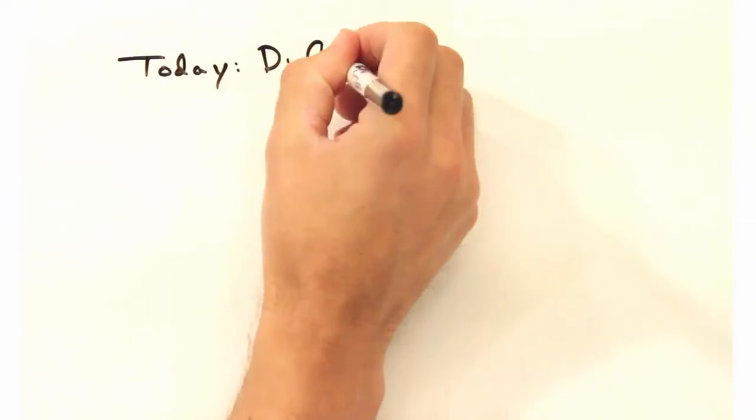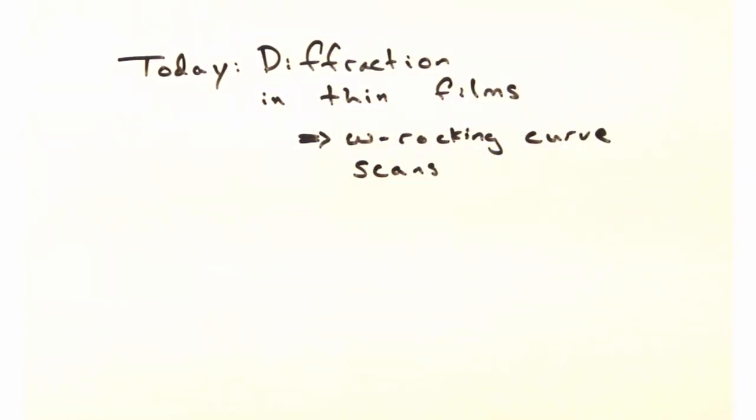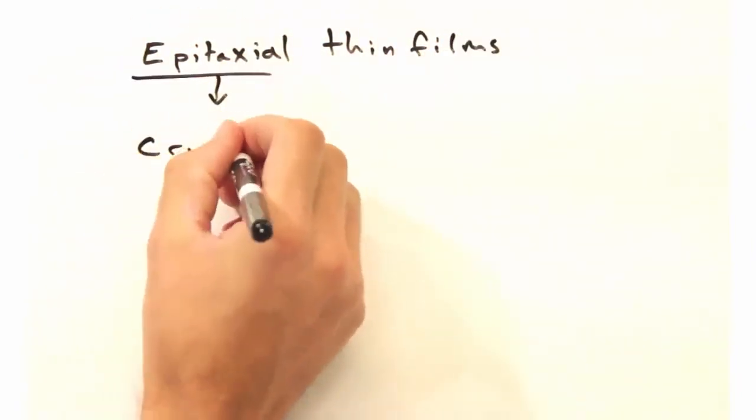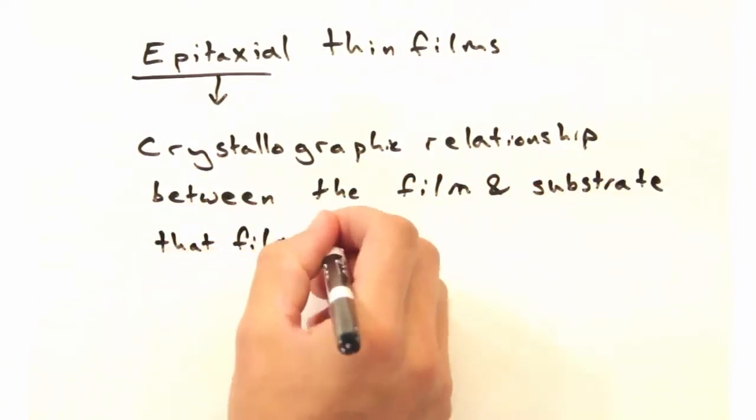Today our goal is to look at diffraction for thin films and introduce the Omega Rocking Curve Scan. You'll typically use this technique on an epitaxial thin film where there's a crystallographic relationship between the thin film orientation and the substrate you're growing on.